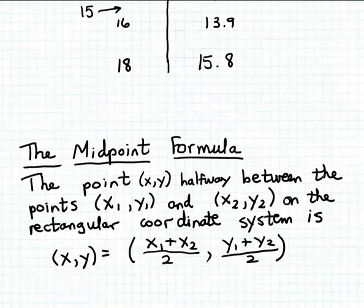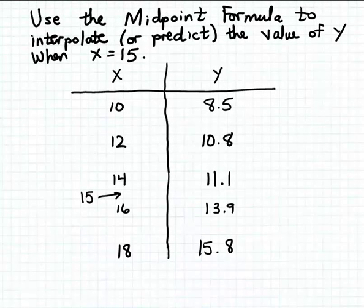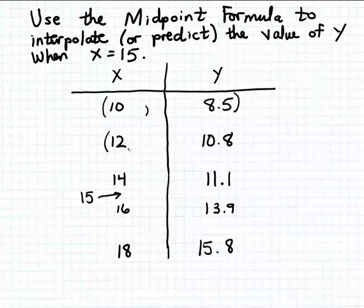How are we going to apply the midpoint formula in this example? We're going to convert this table of data pairs to a relation — a set of ordered pairs. We'll think of each related pair of x and y values in the table as an ordered pair, and then we can think of each ordered pair as coordinates for points on the Cartesian or rectangular coordinate system.